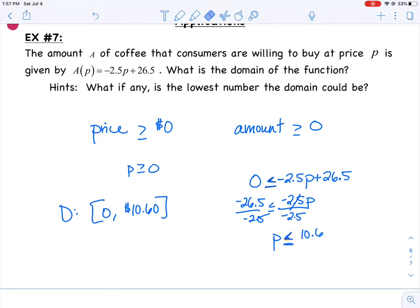Well, we have P, which is our input, our x value if you want to think of it that way. And then we have our output, the amount. Depending on the price will depend on how many people buy your coffee.